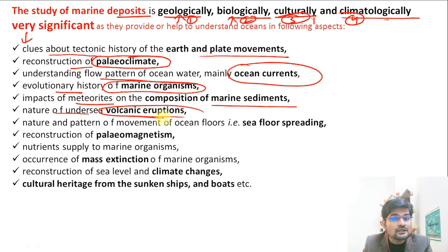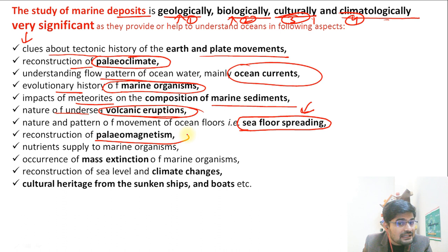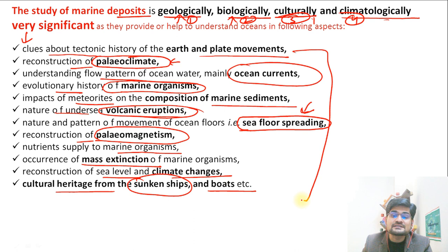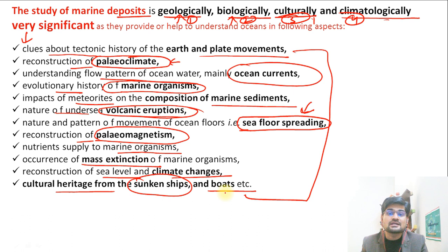We also understand the nature of undersea volcanic eruptions, seafloor spreading linked to continental drift and plate tectonics, and paleomagnetism. Additionally, they inform us about nutrient supply to marine organisms, occurrence of mass extinctions, reconstruction of sea level and climatic changes, and cultural heritage from sunken ships and boats. Ocean floors are a repository of vast knowledge.